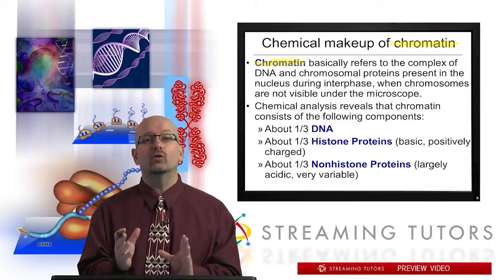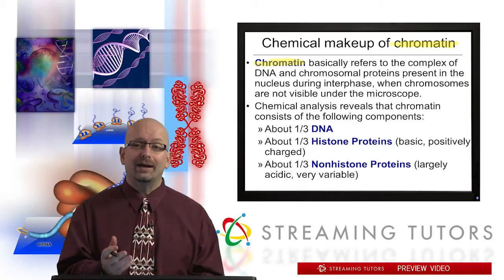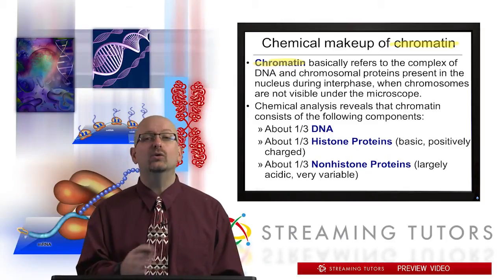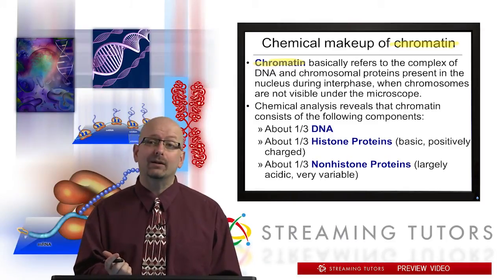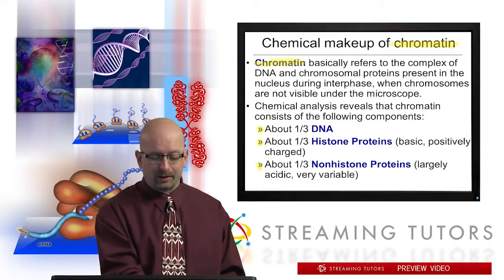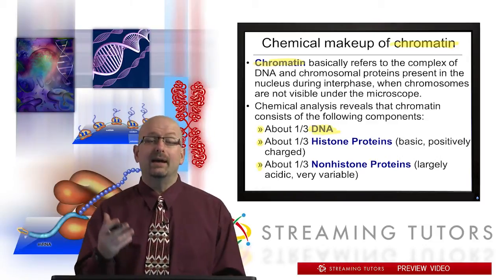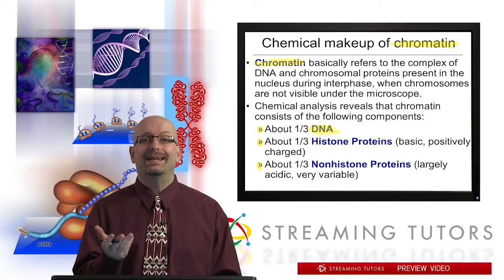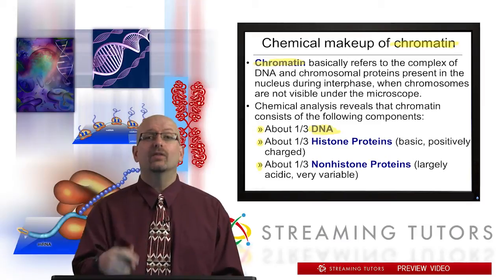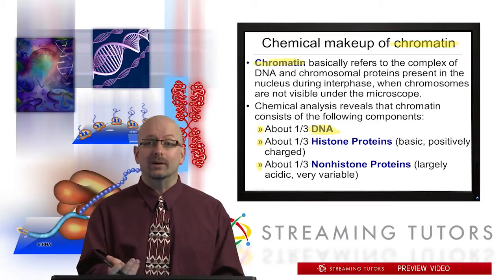Starting with chromatin — if we isolate that and do a sort of bulk chemical analysis on it, it turns out that it's roughly one-third, one-third, and one-third: about one-third DNA. The DNA is the informational part; that's the part that the rest of it is acting to compact. There are special proteins called histone proteins that are very important. They're also conserved and they're in all eukaryotes.